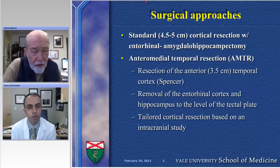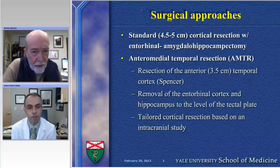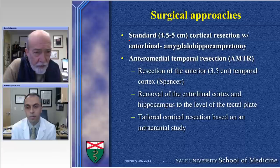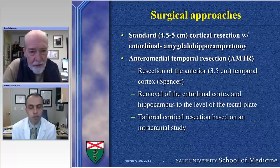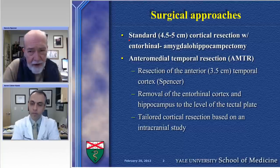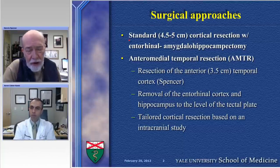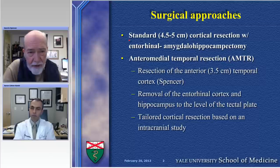As one knows, this evolution of more medial resections began in the late 70s through the 80s. In general, the resection, as I perform it, revolves around a three to three-and-a-half centimeter neocortical resection of the pole, involving just the middle and inferior temporal gyrus, as access to the temporal horn and as access to the resection of the important structures that provide the triad of epileptogenesis in the medial temporal lobe — that is the entorhinal cortex, the amygdala, and the hippocampus.